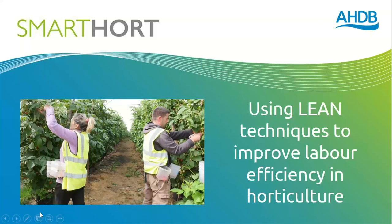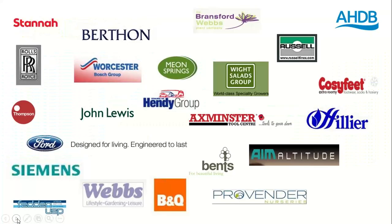Lean techniques come from the automotive industries and are used to improve productivity and reduce lead times. Fedden USP has been running for about 14 years, working across a wide range of organisations. We started in manufacturing, working with companies like Rolls-Royce Cars and Siemens, and more recently with retailers like John Lewis, B&Q, large independent garden centres, and around 140 horticulture and agricultural companies.